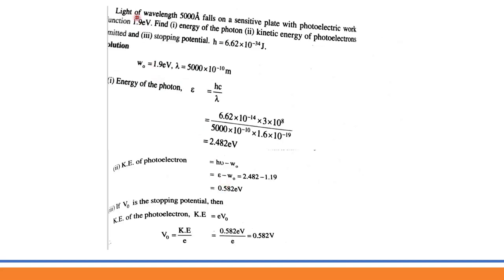Second question: Light of wavelength 5000 Å falls on a sensitive plate with photoelectric work function 1.9 eV. Find the energy of the photon, the kinetic energy of the emitted photoelectrons, and the stopping potential. The incident radiation energy is E = hc/λ = 2.482 eV. Since the incident radiation energy is greater than the work function, photoelectric emission occurs.